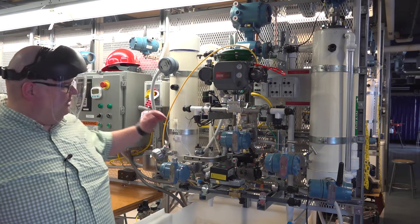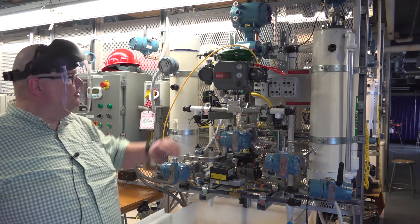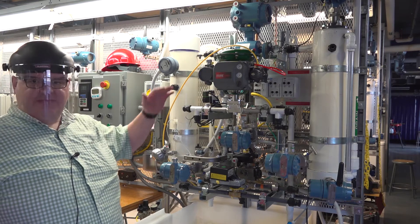This one's a flow transmitter. It's measuring how much fluid is moving through the pipe. We have a control valve to throttle the fluid flow rate.